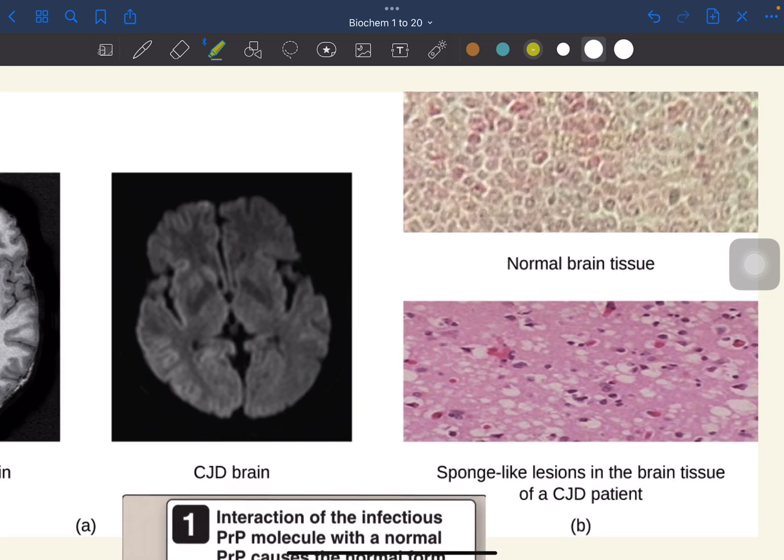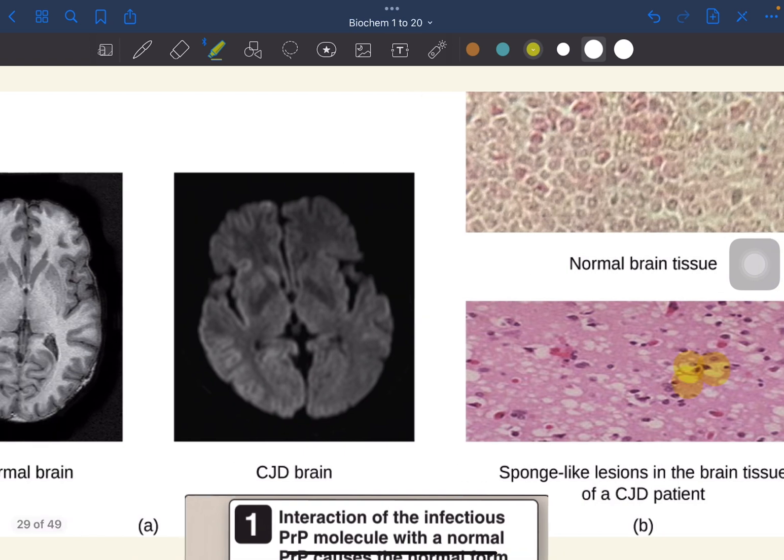These prions will also cause small holes to develop in the brain. The brain becomes like a sponge. See, these are holes.